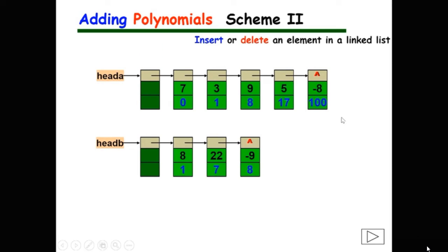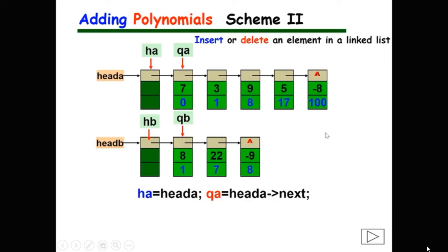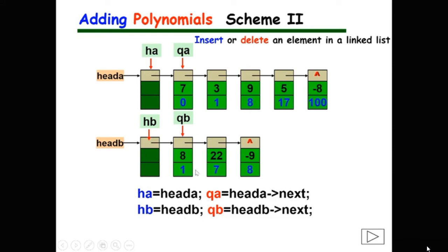First, we declare four pointers. Because a singly linked list is a one-way structure, HA always points to QA's predecessor node. Similarly, pointer HB always points to the node prior to QB. Initially, HA points to head A, QA points to the first node in list A, HB points to the head node of list B, and QB points to the first node in list B.